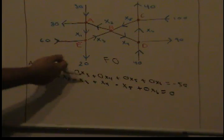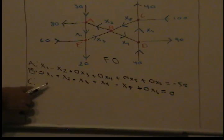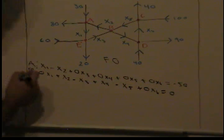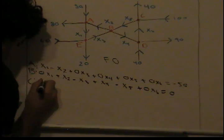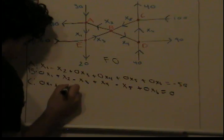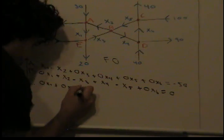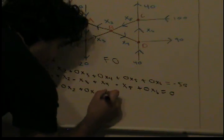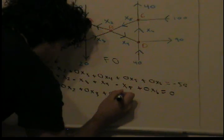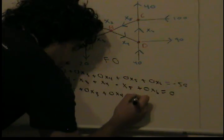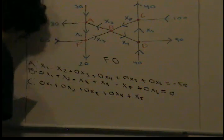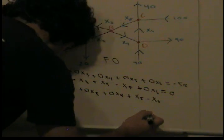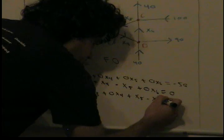Okay, so this is part two of the network diagram. In part one we stopped at node C, so let's continue. At node C we had 0x1 plus 0x2 plus 0x3 plus 0x4 plus x5 minus x6 equals 60.